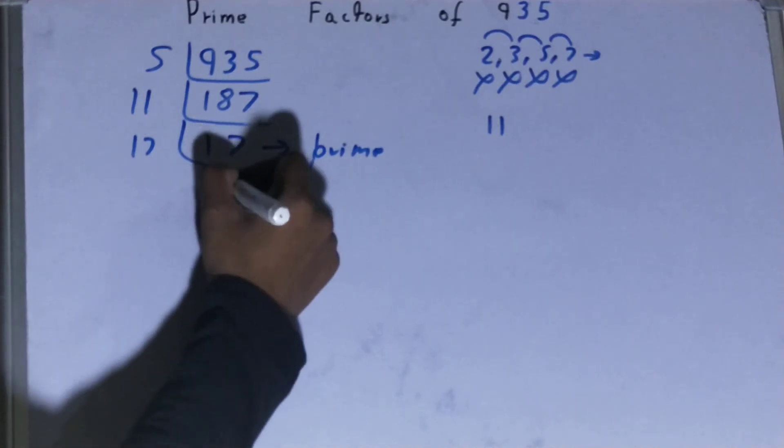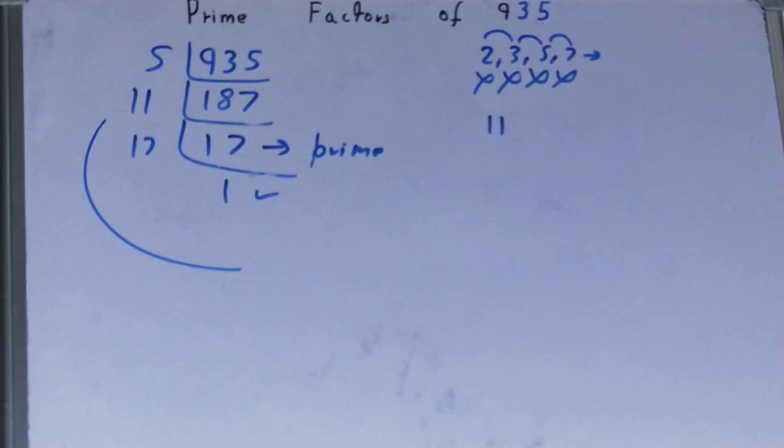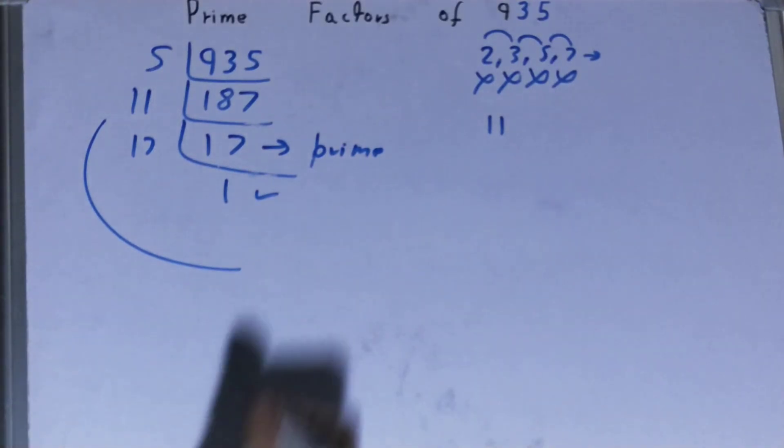And when you'll do so, you'll be left with 1. Once you're left with 1, the work is done, and whatever you have on the left-hand side will be the set of prime factors for the number 935.